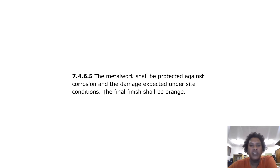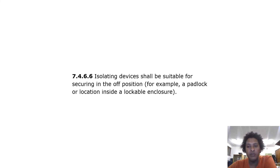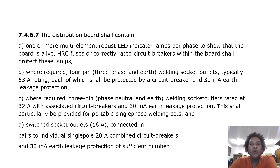The metalwork shall be protected against corrosion and the damage expected under site conditions. The final finish shall be orange. Isolating devices shall be suitable for securing in the off position, for example by a padlock or location inside a lockable enclosure. The distribution board shall contain one or more multi-element robust LED indicator lamps per phase to show that the board is alive. HRC fuses or correctly rated circuit breakers within the board shall protect these lamps.